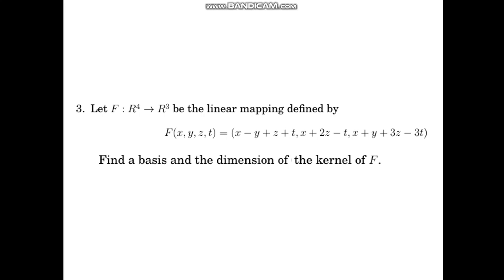Let F from R to the fourth to R to the third be the linear mapping defined by F(x, y, z, t) equals (x - y + z + t, x + 2z - t, x + y + 3z - 3t). Let's find the basis and the dimension of the kernel of F.